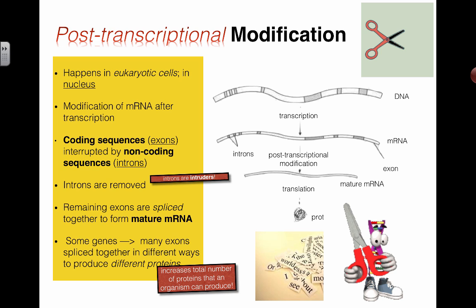And I just mentioned many of these exons can be spliced together in different ways to produce different proteins. It actually increases the total number of proteins that an organism can produce. If one gene can produce five different proteins by splicing the exons together in different ways, now you've just multiplied the number of possible genes. If on average each gene can be mixed up five different ways, you just increase the number of possible proteins to be made by five times. So that's pretty awesome.